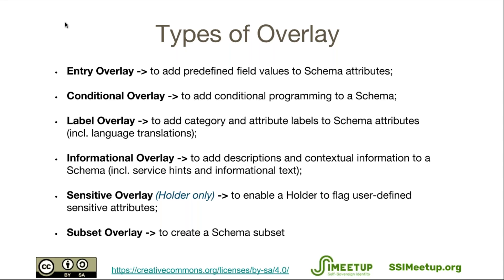The sensitive overlay is for the holder only. Rather than being solely available to the issuer, the holder also has access to this overlay and can flag user-defined sensitive attributes. For instance, if a holder thought their gender was sensitive, a message could pop up saying someone is requesting this information — according to your sensitive overlay you've flagged gender as sensitive, are you sure you want to share it? The subset overlay is used to create a schema subset, so if you only want two or three attributes from the schema, you would use a subset overlay.